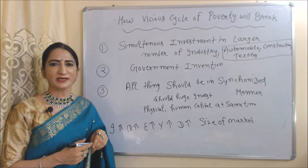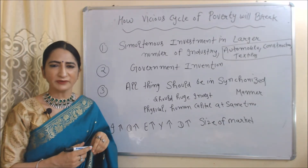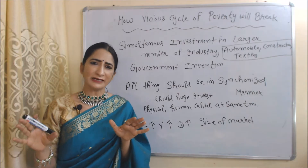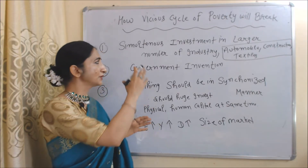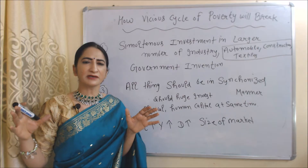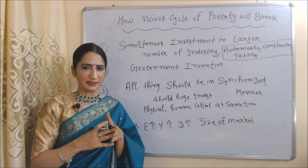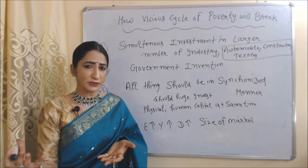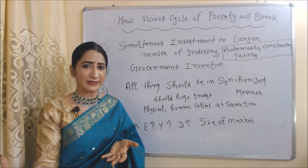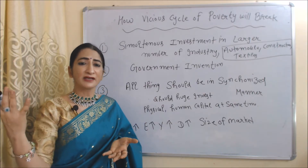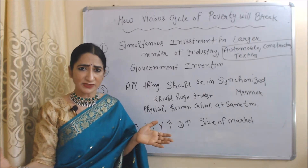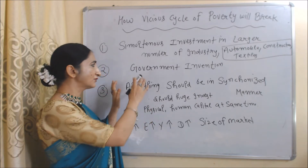But how will the vicious cycle of poverty break? This theory talks about balanced growth. That's why we need to do simultaneous investment in large-scale industries. For example, we need to simultaneously invest in the automobile industry, construction industry, textile industry, and so on.